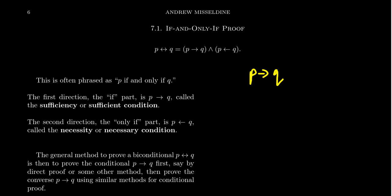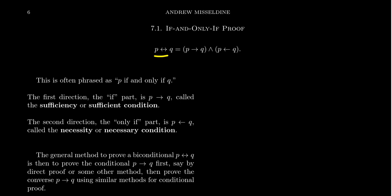What I want to do now is develop a technique to prove a biconditional statement. If you want to prove P is equivalent to Q, the thing to remember is that biconditional statements are logically equivalent to the conjunction of two conditional statements. So P is equivalent to Q is the same thing as P implies Q and its converse Q implies P.